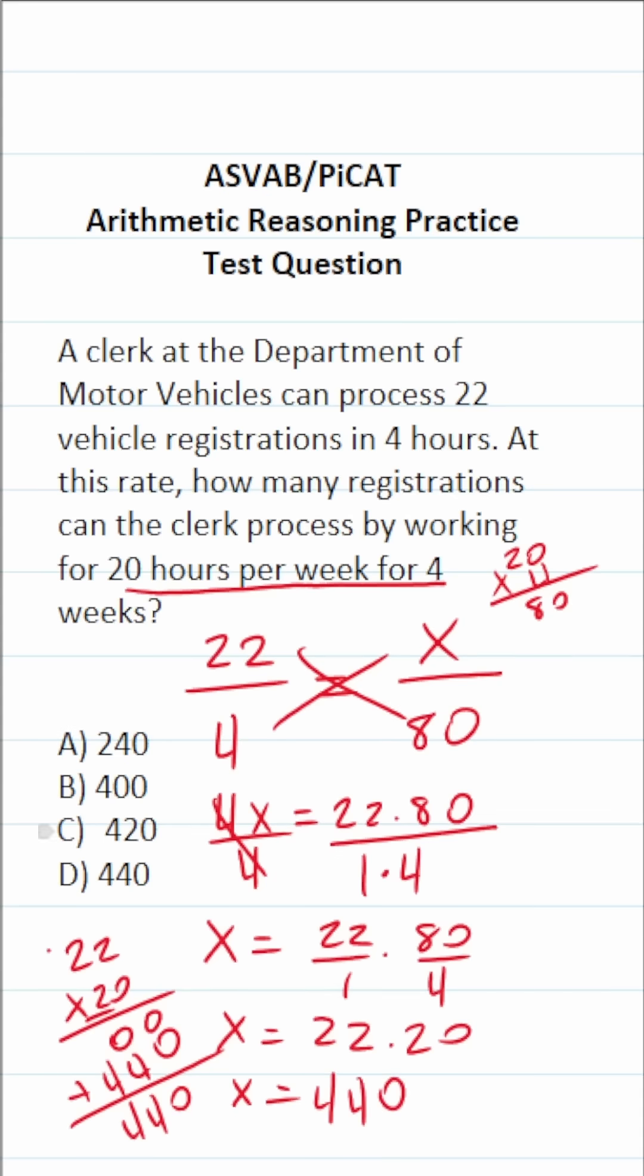So in other words, the clerk can process 440 vehicle registrations over four weeks if they work 20 hours per week.